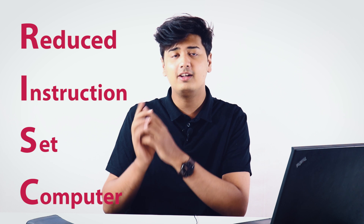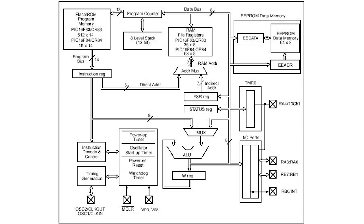PIC microcontroller supports RISC architecture, which stands for Reduced Instruction Set Computer. Looking at some characteristics of this RISC architecture: only 35 commands are there in an instruction set, and most of the instructions are single cycle — that is 2 clock cycles or 4 clock cycles in 8-bit mode. You can calculate the execution time of the command on the basis of its clock frequency. On your screen right now is the full architecture of PIC microcontroller.